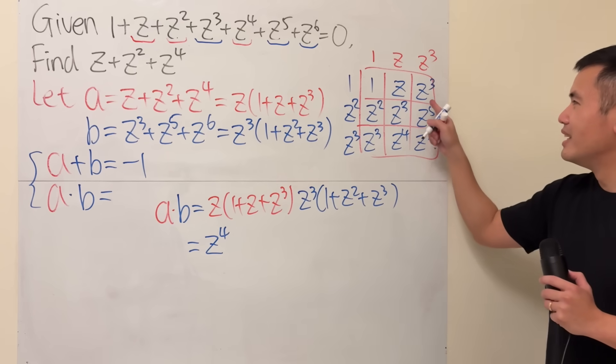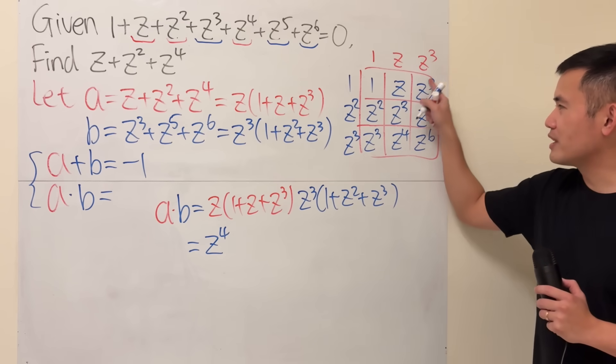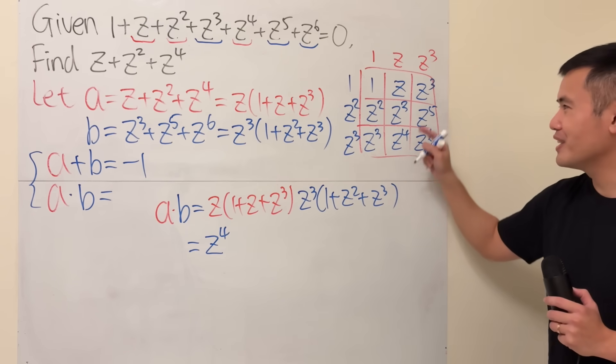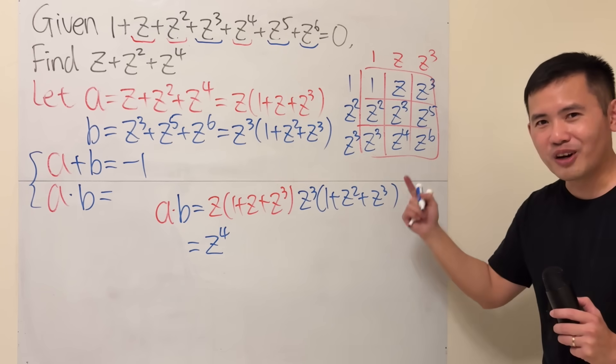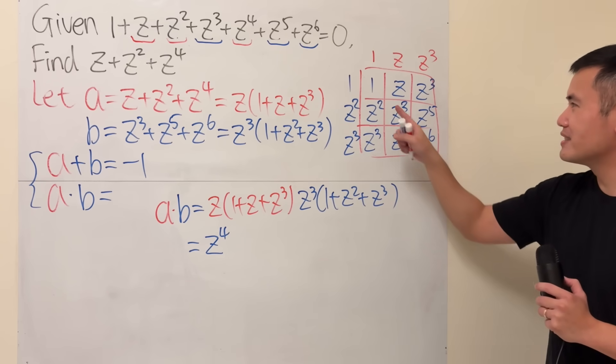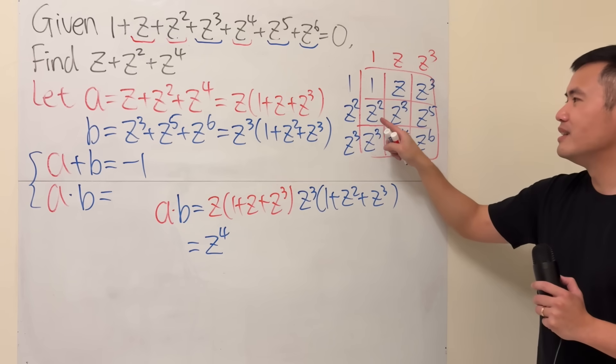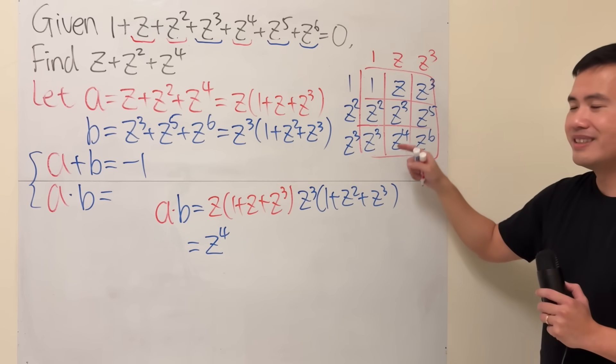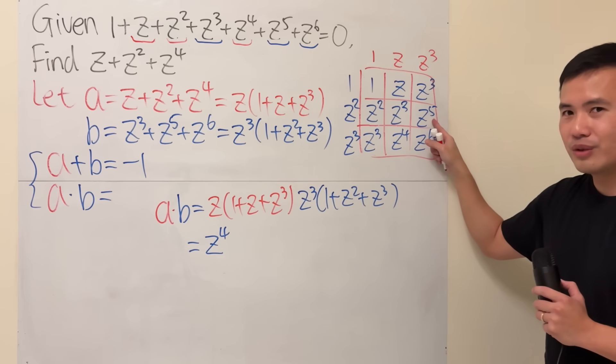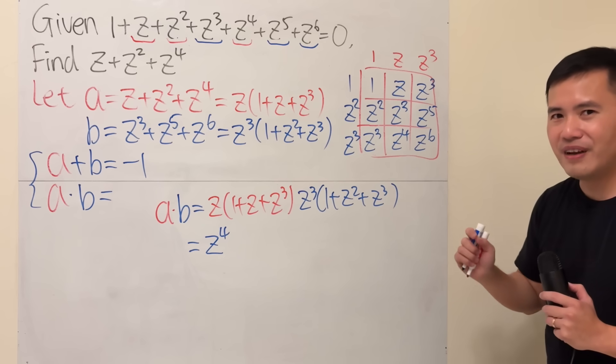So far, so good. Now, check this out. z cubed, z cubed, z cubed, tic-tac-toe. How fun is this? Look at that, z cubed. You don't see this often. Anyway, the more important thing is that we have 1, z, z squared, z cubed, z to the fourth, z to the fifth, z to the sixth. Very, very nice.